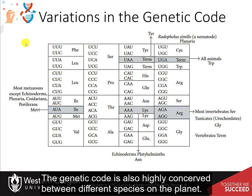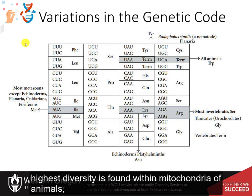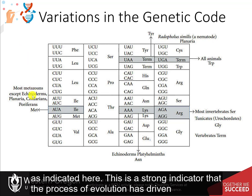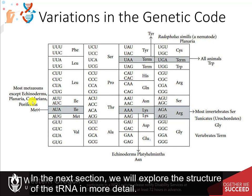The genetic code is also highly conserved between different species on the planet, with very few changes or variations between all the different life forms. The highest diversity is found within the mitochondria of animals, as indicated here. This is a strong indicator that the process of evolution has driven the generation of diversity on the planet over millions of years. In the next section, we will explore the structure of the transfer RNA in more detail.